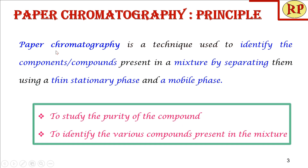Paper chromatography is a technique used to identify the components or compounds present in a mixture by separating them using a thin stationary phase and a mobile phase. It is majorly used to study the purity of a compound and also to identify the various compounds present in the mixture.